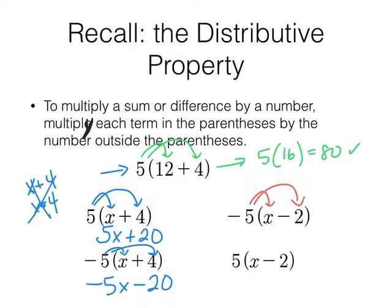Same idea over here. Distributing. This time over a difference. Notice here. It's over a sum. And here it's over a difference. So negative 5 times x. Negative 5x. Negative 5 times a minus 2. Positive 10. We don't need any extra symbols. So get in the habit of writing it that way.